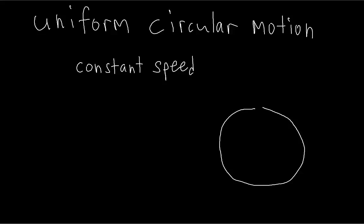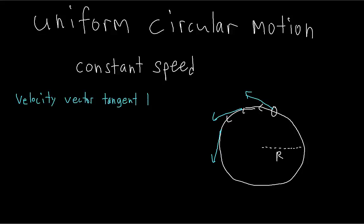The special thing about uniform circular motion is that the uniform means the object is moving at a constant speed. However, even though the speed is constant, as you can see here, the velocity vector is always tangent to the circle — always tangent to the path of the object. That means, as the object moves around the circle, the velocity vector is always changing direction, but not magnitude. Remember, the magnitude is the speed.